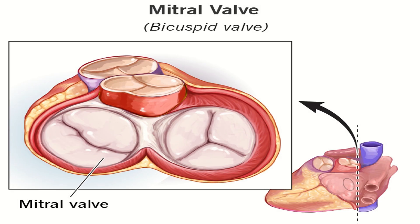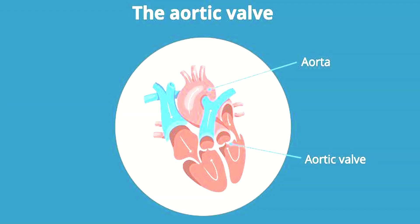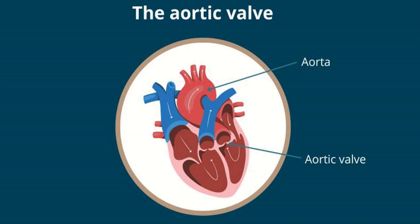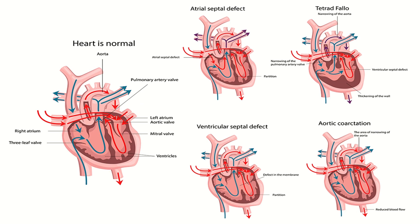The valve at the entrance of the aorta — the blood vessel taking blood to the body — is called the aortic valve. After understanding normal heart anatomy, it is easy to understand the different types of congenital cardiac anomalies which occur at different levels in the heart.